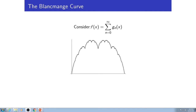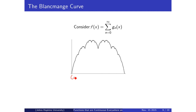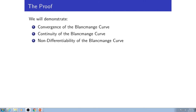Now we have a picture of the Blancmange curve in its entirety. We have added up an infinite number of iterations of the individual g of n, graphed from 0 to 1. That infinite sum of individual g of n's is a function that is continuous everywhere but differentiable nowhere. And now we're going to prove that to you.